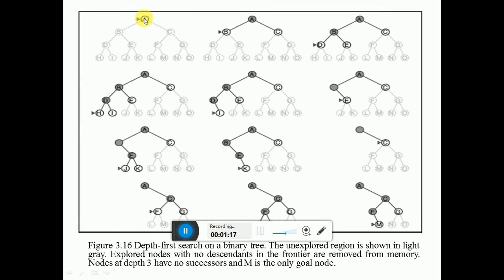This is root node A. It is expanded into B and C first. Root node A is at depth zero. At depth level one, it is expanded into B and C. Then B is expanded into D and E.